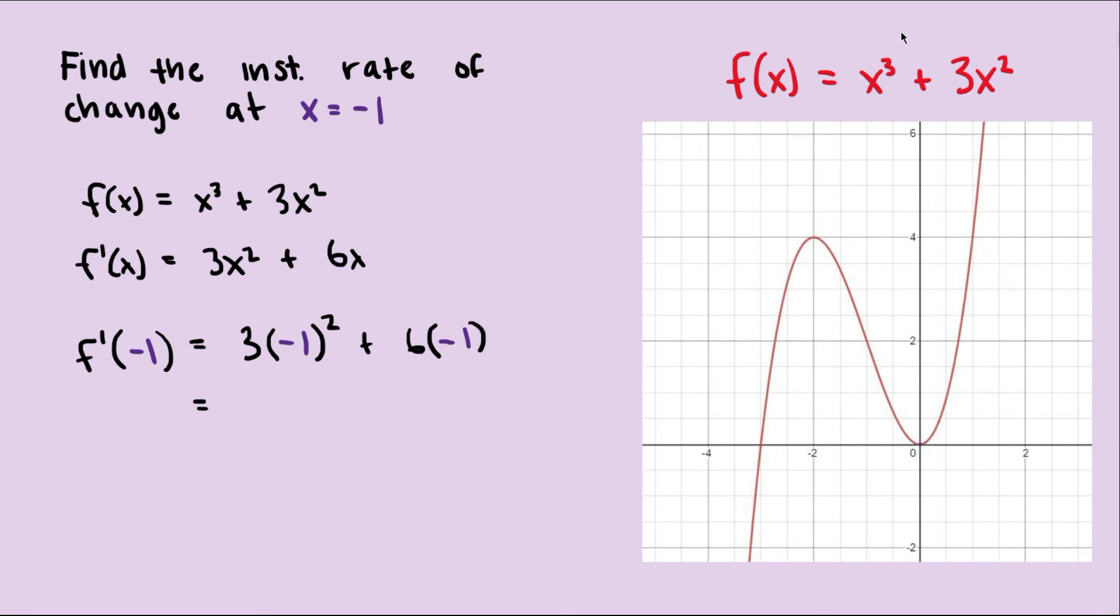That's 3 times negative 1 squared is just 1 minus 6 because we multiplied 6 by negative 1. And that's negative 3. So the instantaneous rate of change when x equals negative 1 is negative 3.